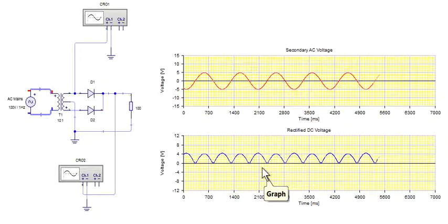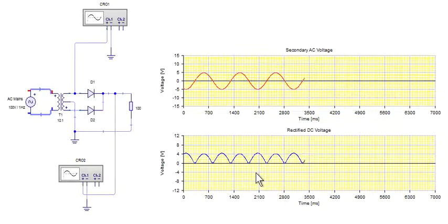So in a way you can say that the frequency of full wave rectifier ripple voltage is double as compared to the frequency of AC voltage.